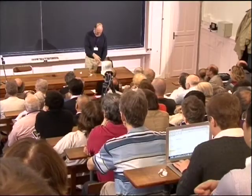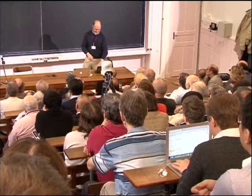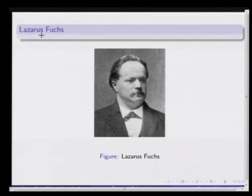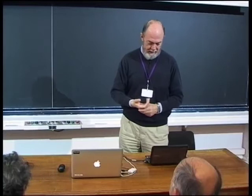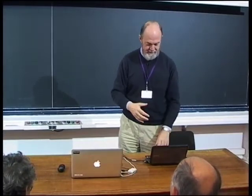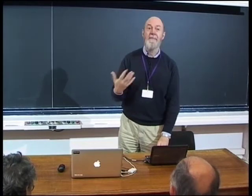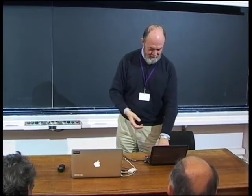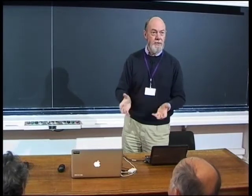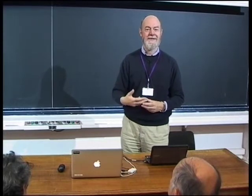This particular prize had Hermite as the important judge, along with Bertrand, Bonnet, Puiseux, and Bouquet. The German they want to catch up with is Lazarus Fuchs, who has been doing important work in the Weierstrassian spirit on differential equations for some 10 or 15 years. The subtext: perhaps you might like to join in on Fuchs's theory of differential equations. And that's what Poincaré proceeds to do — it's one of three things he starts doing in this period, alongside number theory, and real differential equations and flows on surfaces.